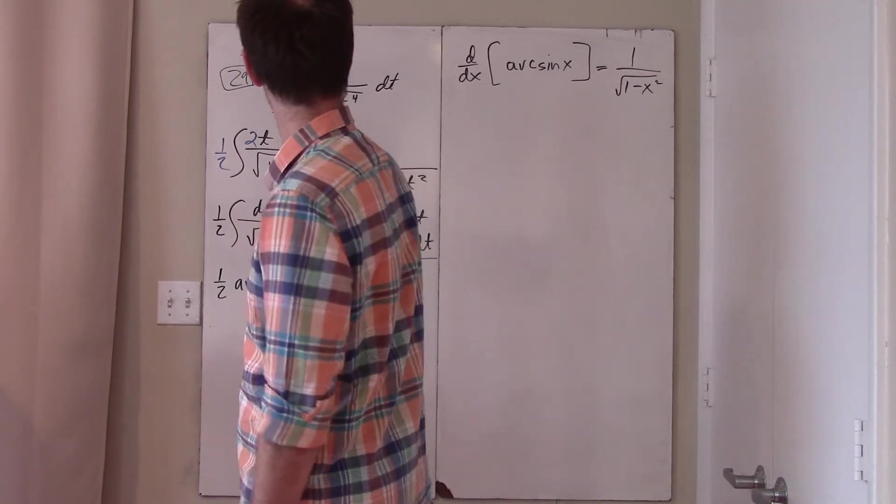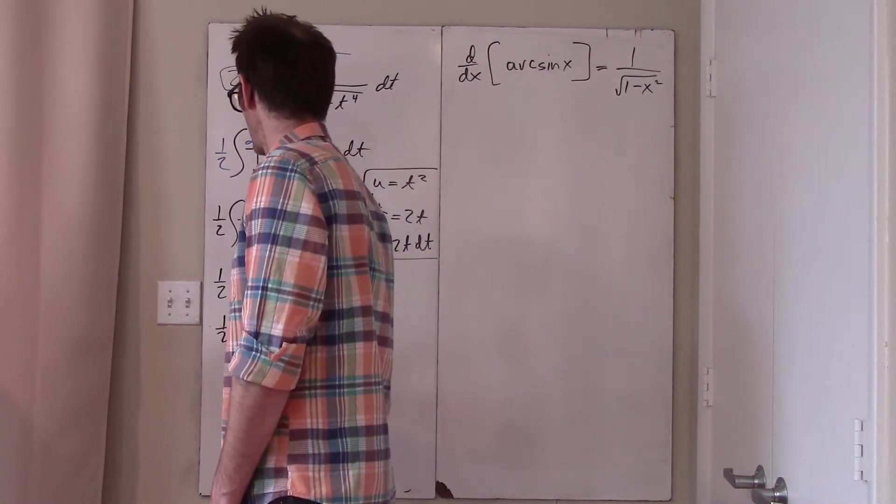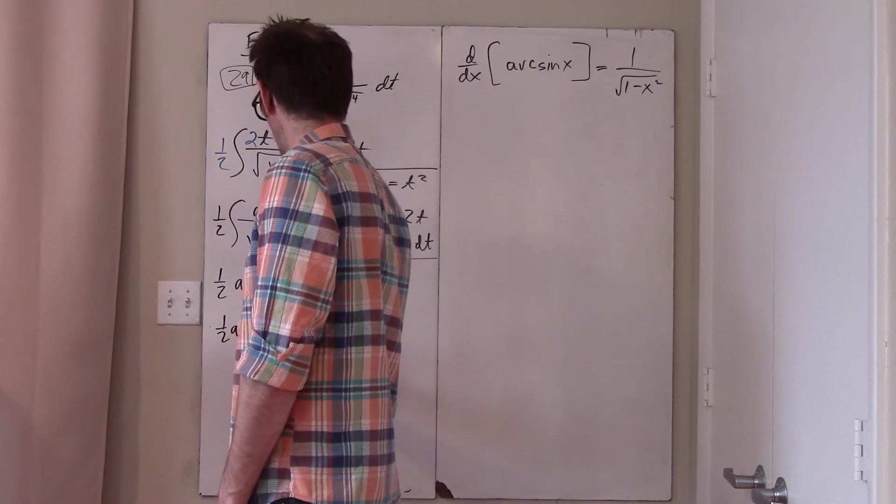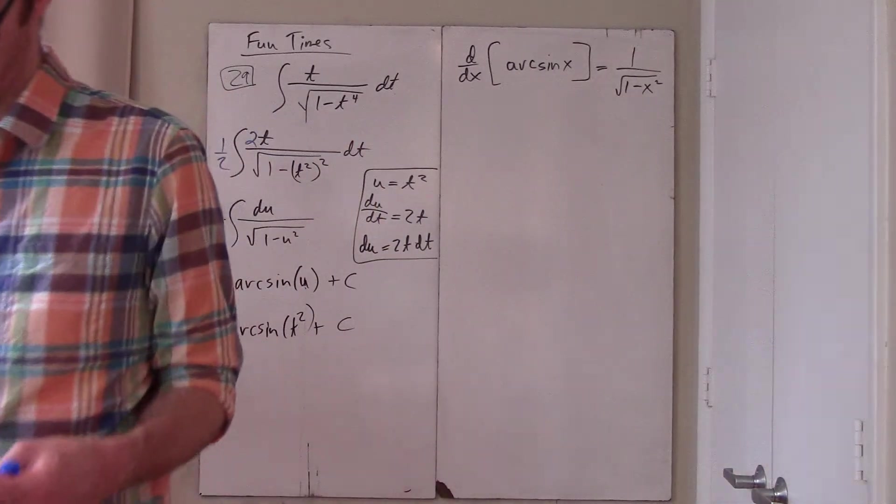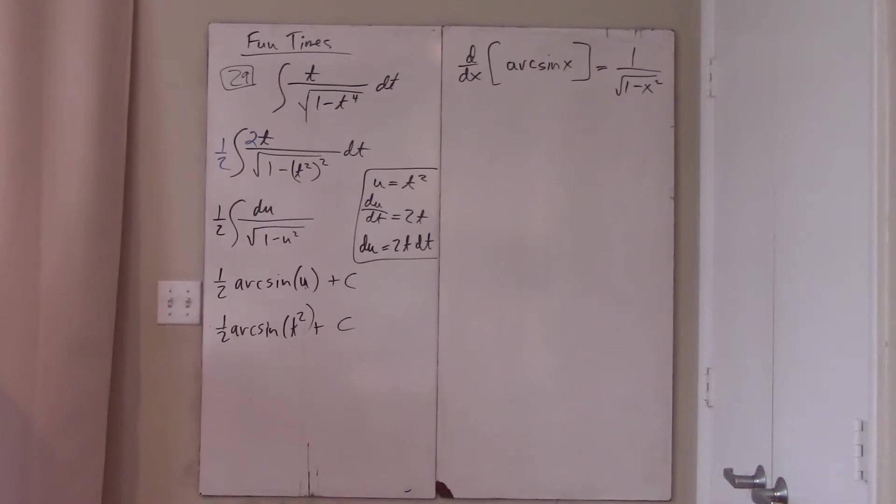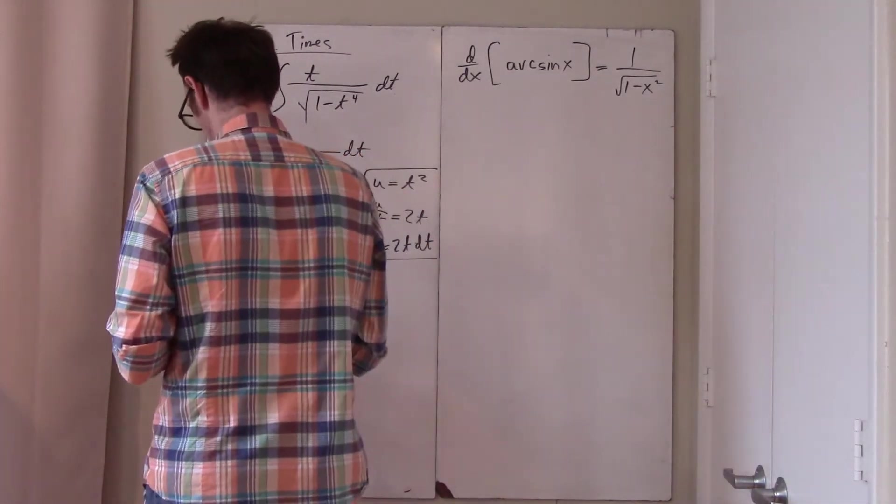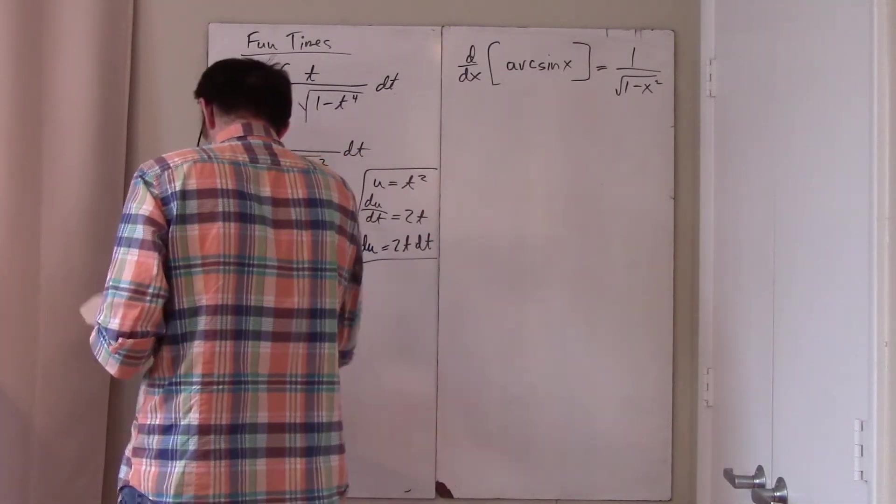And thus, this whole problem becomes 1 half arc sine T squared plus C. And that's just right. Okay, one more problem. One more problem is number 30.